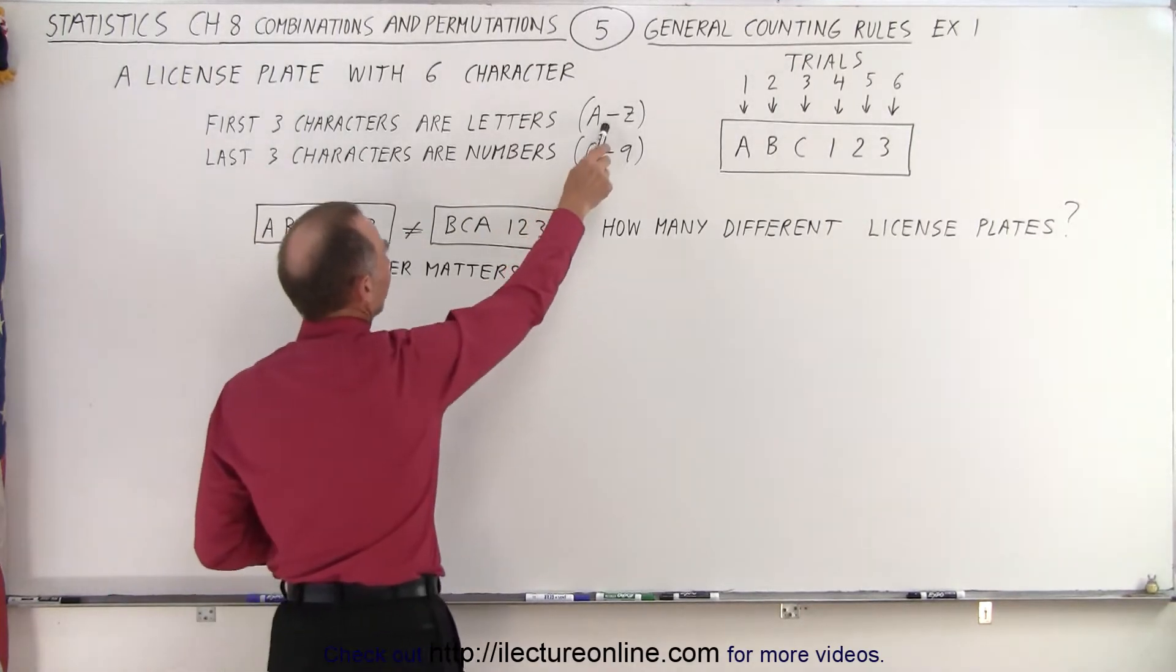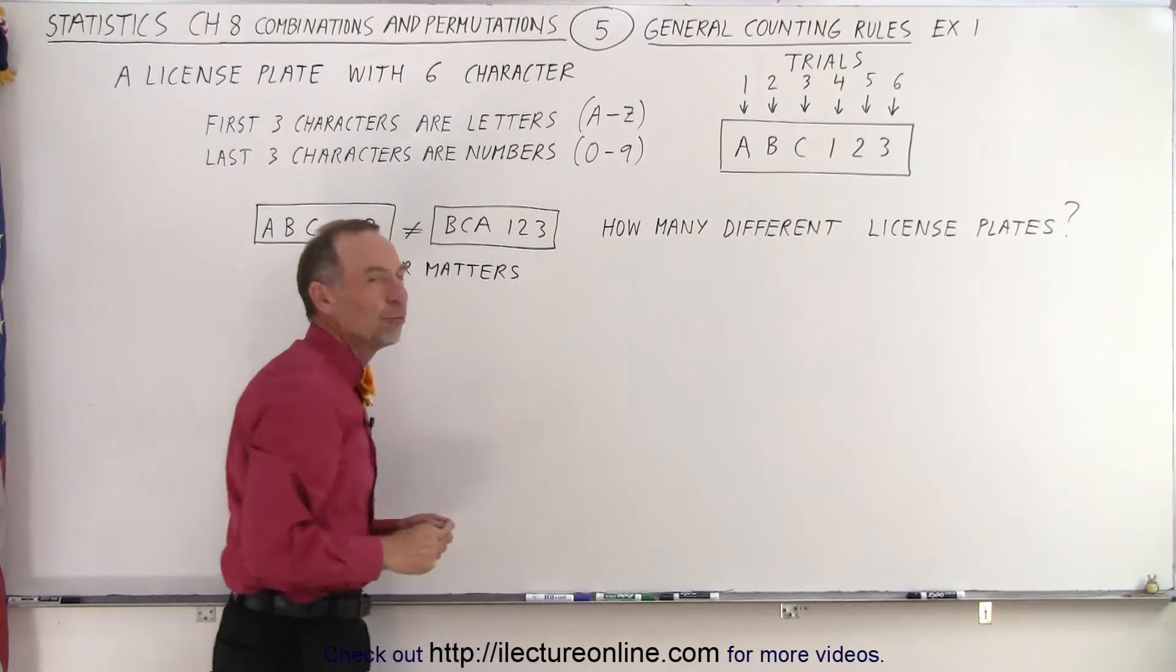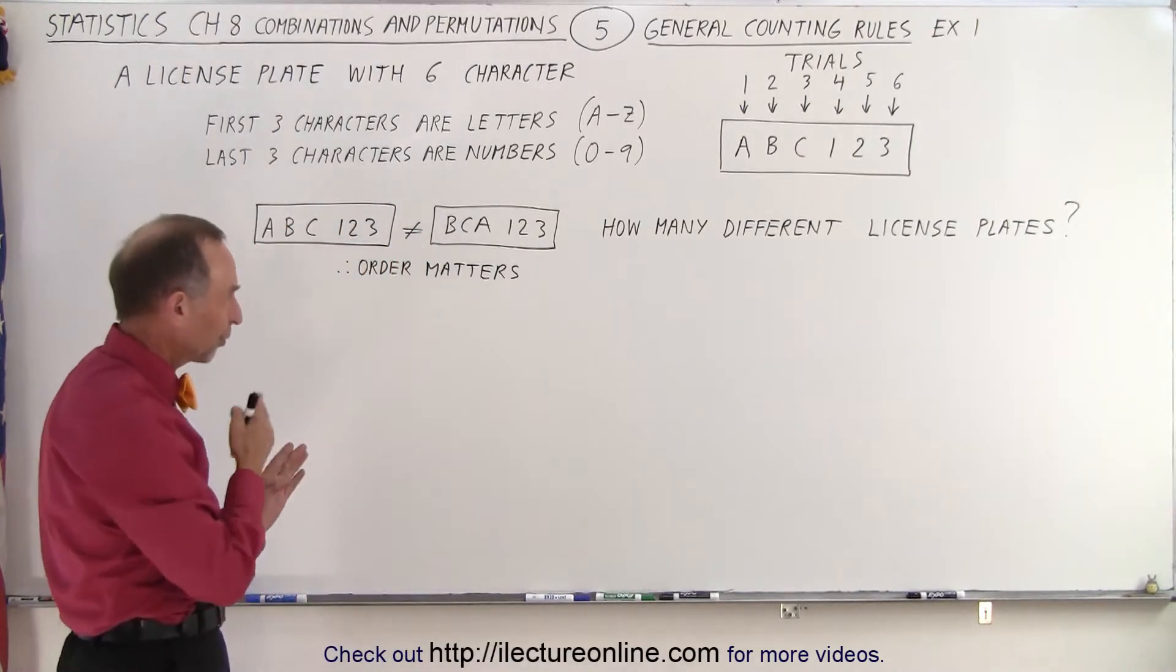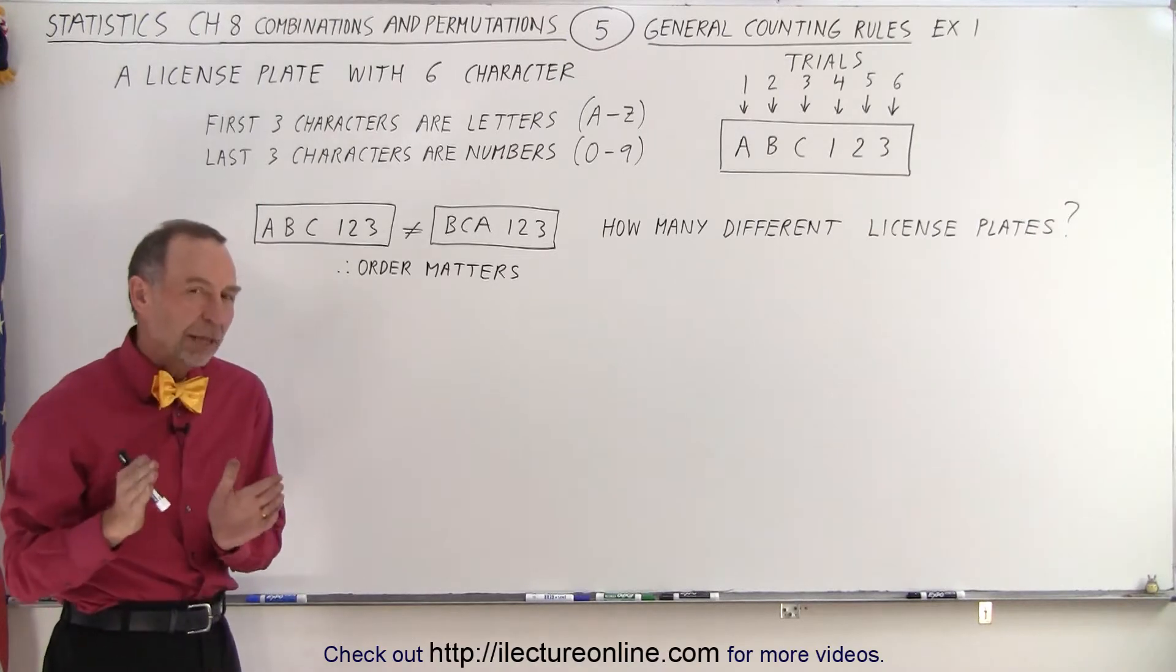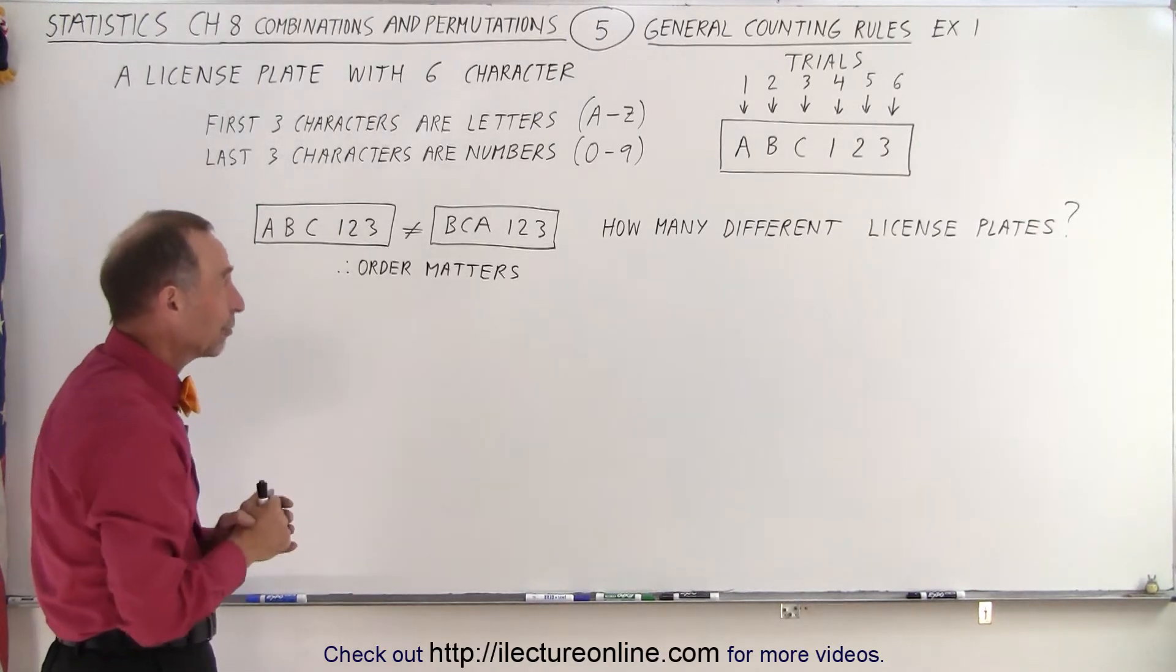Notice there's 26 letters in the alphabet and there's ten numerical characters of one digit from zero all the way up to nine. How many different license plates can we have with that kind of arrangement?